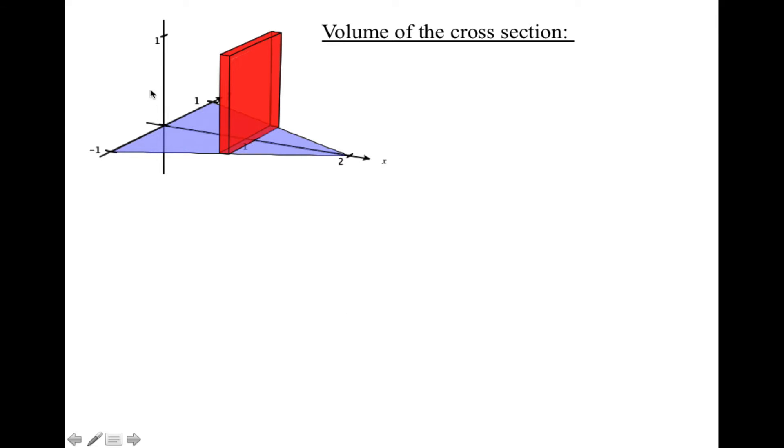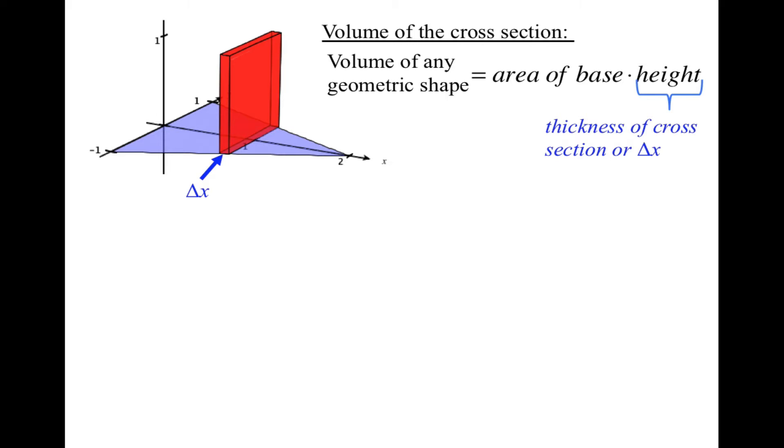Here is our model. We want the volume of any geometric shape, which we know is the area of the base times the height. The height, in this case, is represented by our change in x, or the thickness of a cross-section. Since we're cutting it an infinite number of times into an infinite number of cross-sections, this change of x is going to be irrelevant, eventually.